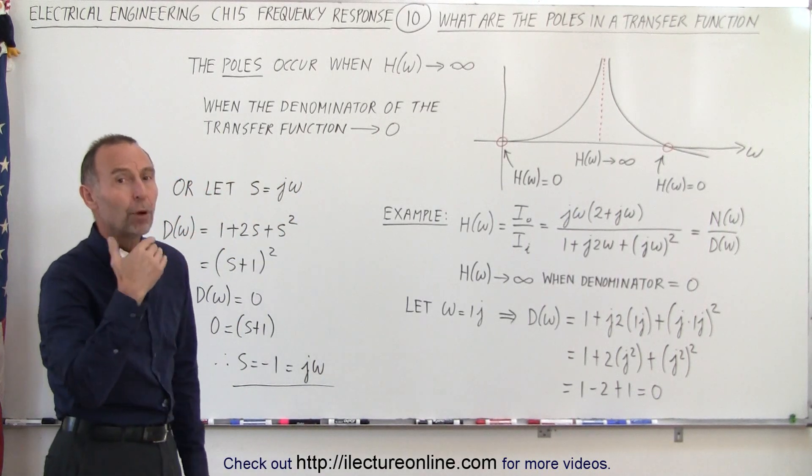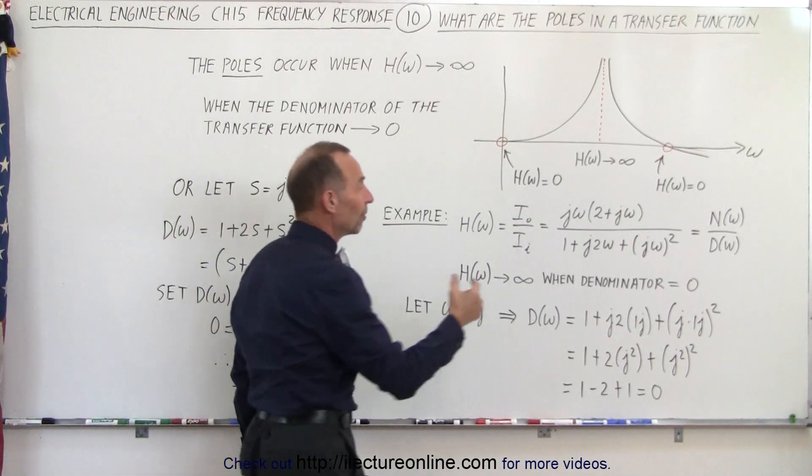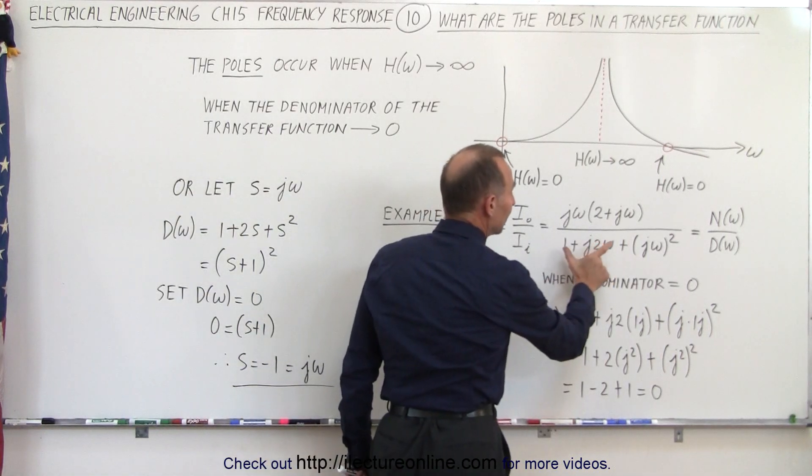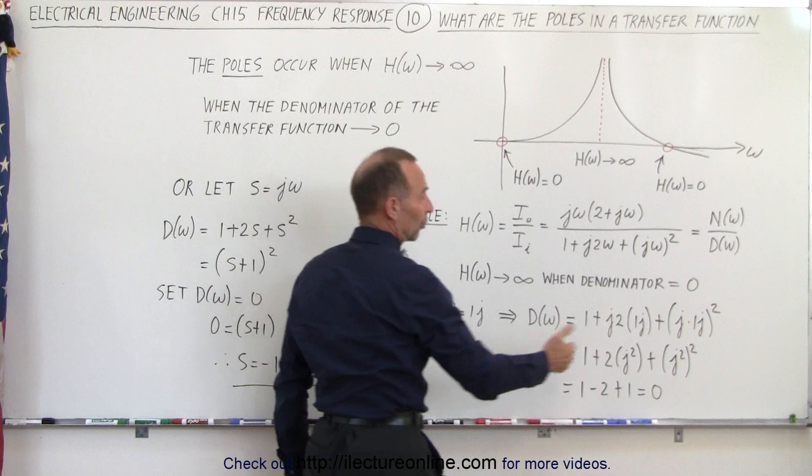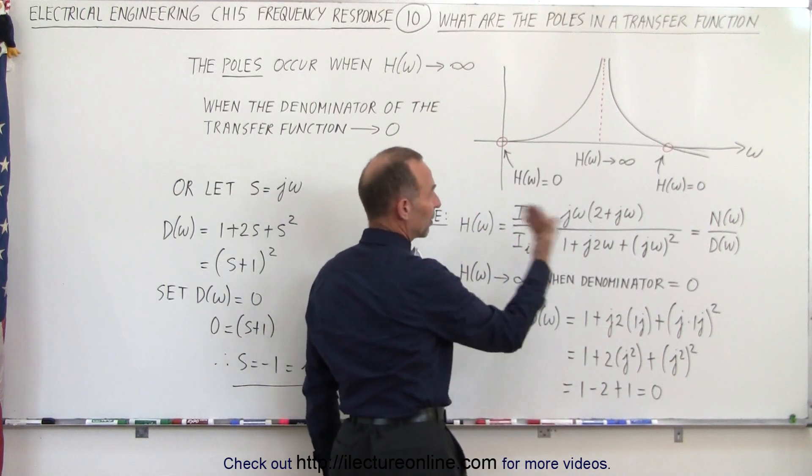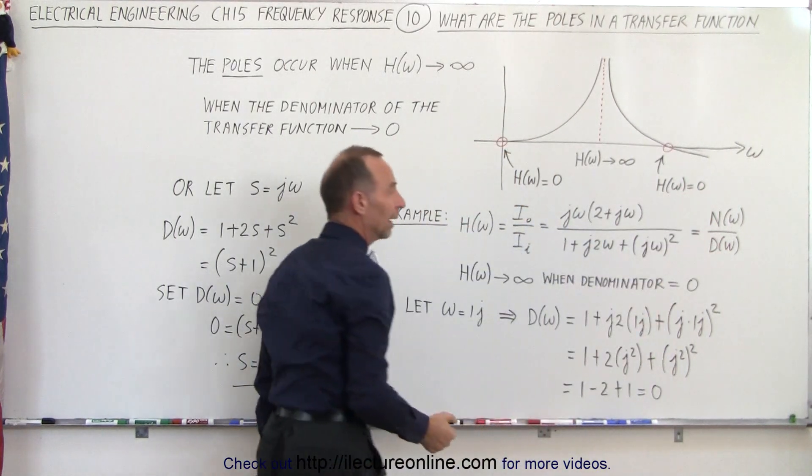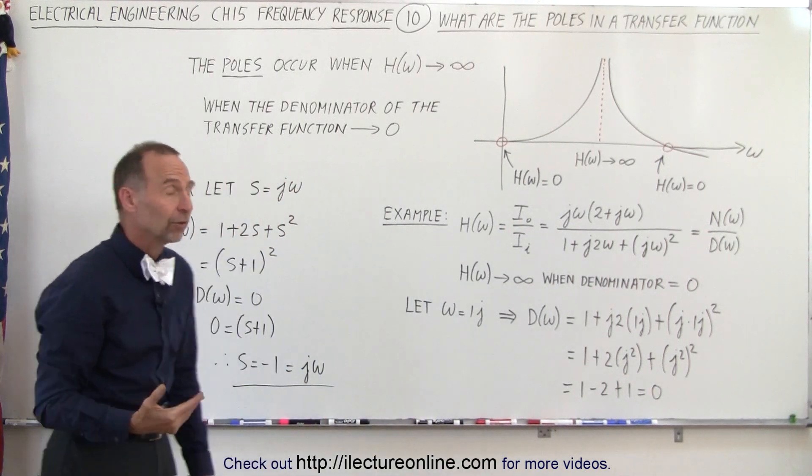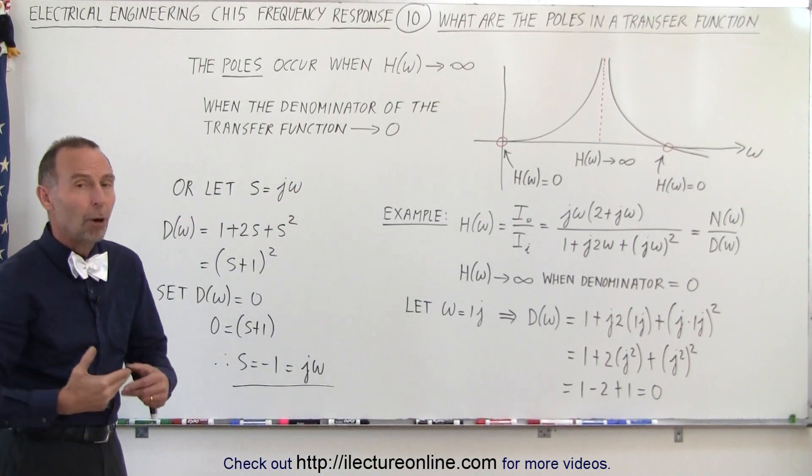But what about the poles? The poles are found whenever some value for j omega makes the denominator equal to zero. So here we can see a transfer function can be thought of as a numerator divided by a denominator. And so if the denominator becomes equal to zero, then we have a pole.